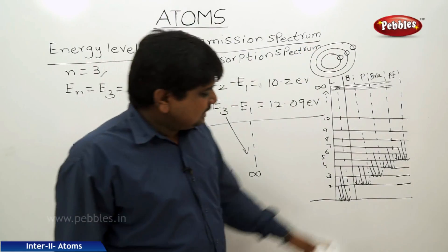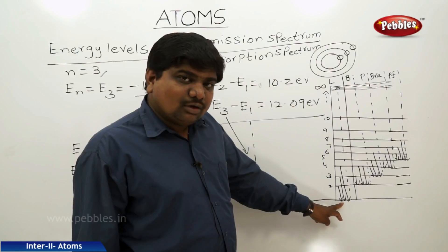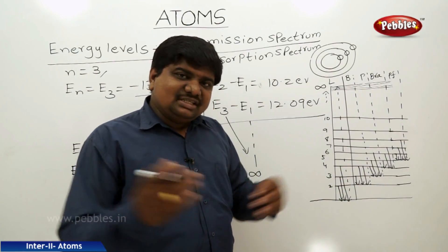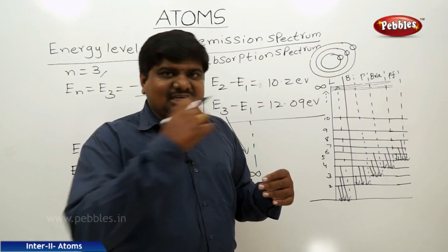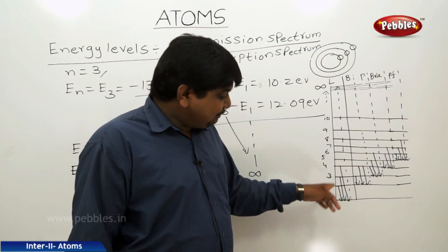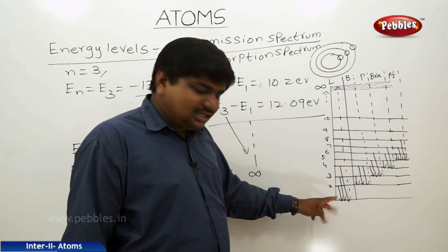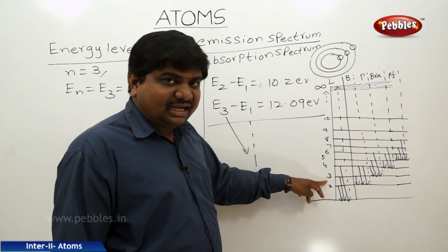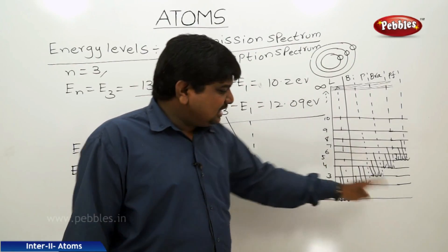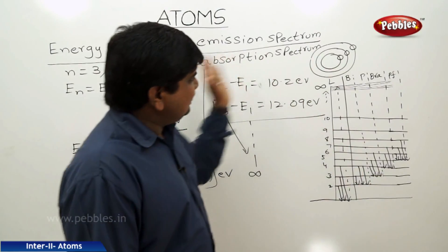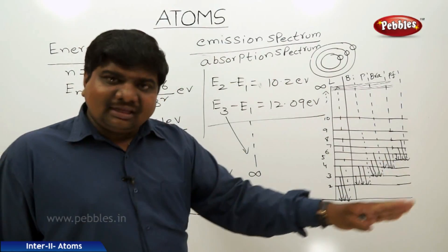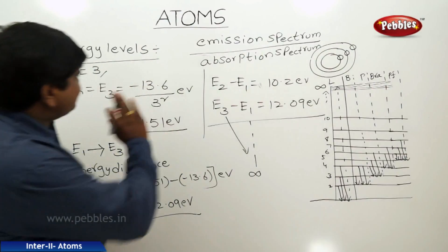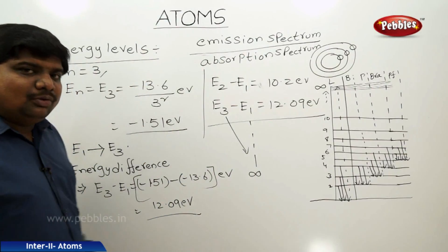Exactly vice versa of the previous case: if an electron is at a lower energy state, by absorbing energy due to collisions, it will excite to a higher energy level. Due to the absorption of energy, the electron moves to the next higher state. The radiation released is orderly arranged, and this is called the absorption spectrum. It is purely based on Bohr's postulates.